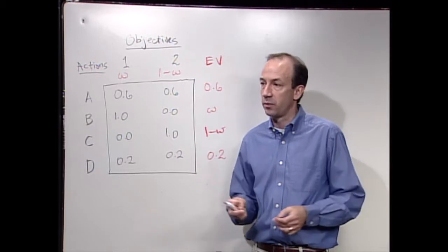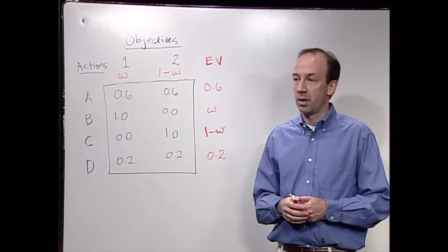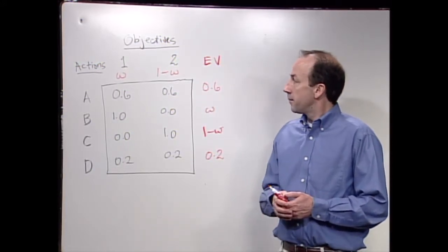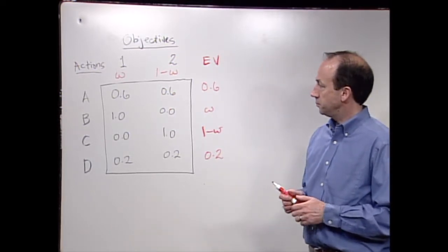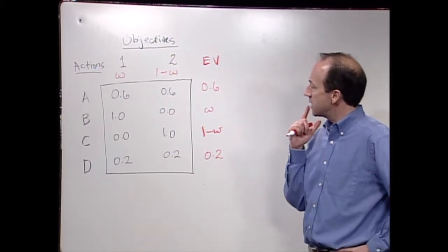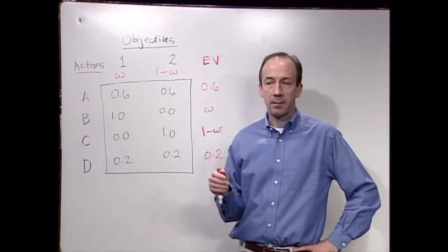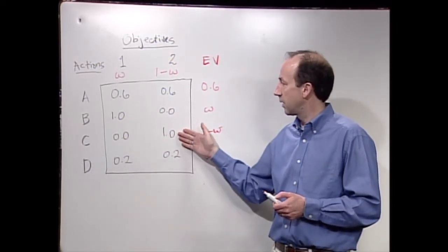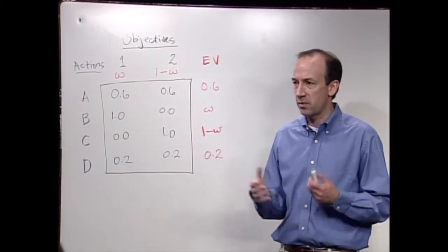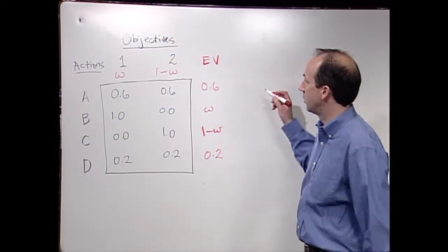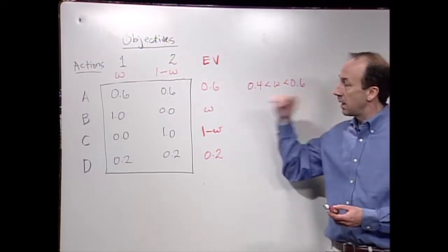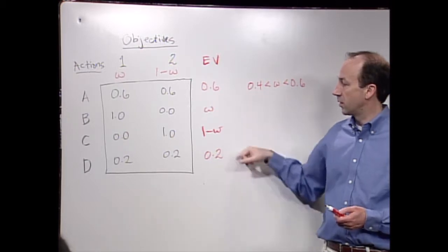We would go through processes like swing weighting or other alternatives to elicit weights on these objectives from the decision maker or group of decision makers. It turns out that alternative A is favored when W is between 0.4 and 0.6 - A has a higher expected value than B or C, and certainly higher than D. If the weight on objective one is greater than 0.6, we would favor B; if it's less than 0.4, we would favor C.